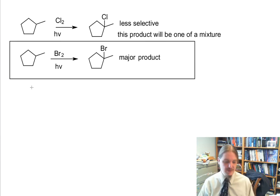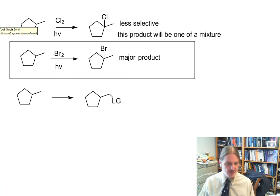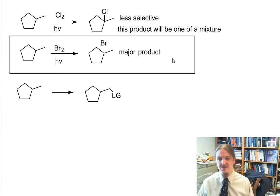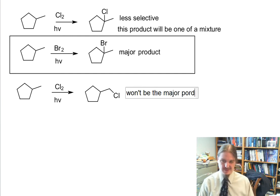What if instead we wanted the leaving group somewhere else, like maybe we wanted the leaving group out here on the methyl? And we wanted to do this in one step. Later on we're going to talk about synthesis and there might actually be a two or three step sequence that could do this better and in higher overall yield. But if we wanted to do this in one step, now we might be better off choosing chlorine because while this product won't be the major product...